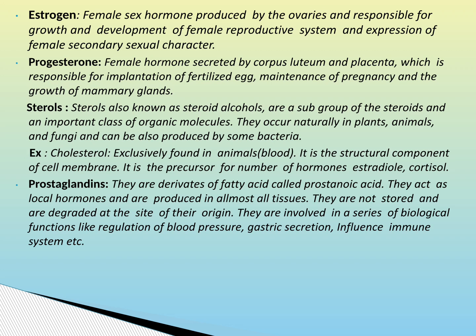Sterols, also known as steroid alcohols, are a subgroup of the steroids and an important class of organic molecules. They occur naturally in plants, animals and fungi and can also be produced by some bacteria. An example is cholesterol, found exclusively in animals; it is a structural component of the cell membrane and a precursor for a number of hormones such as estradiol and cortisol. Prostaglandins are derivatives of fatty acids called prostanoic acid. They act as local hormones, are produced in almost all tissues, are not stored, and are degraded at the site of their origin. They are involved in biological functions like regulation of blood pressure, gastric secretion, and influence on the immune system.